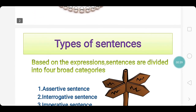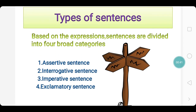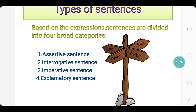Now we go to the types of sentences. Based on the expressions, sentences are divided into four broad categories: first is assertive sentence, second is interrogative sentence, third is imperative sentence, and fourth is exclamatory sentence.